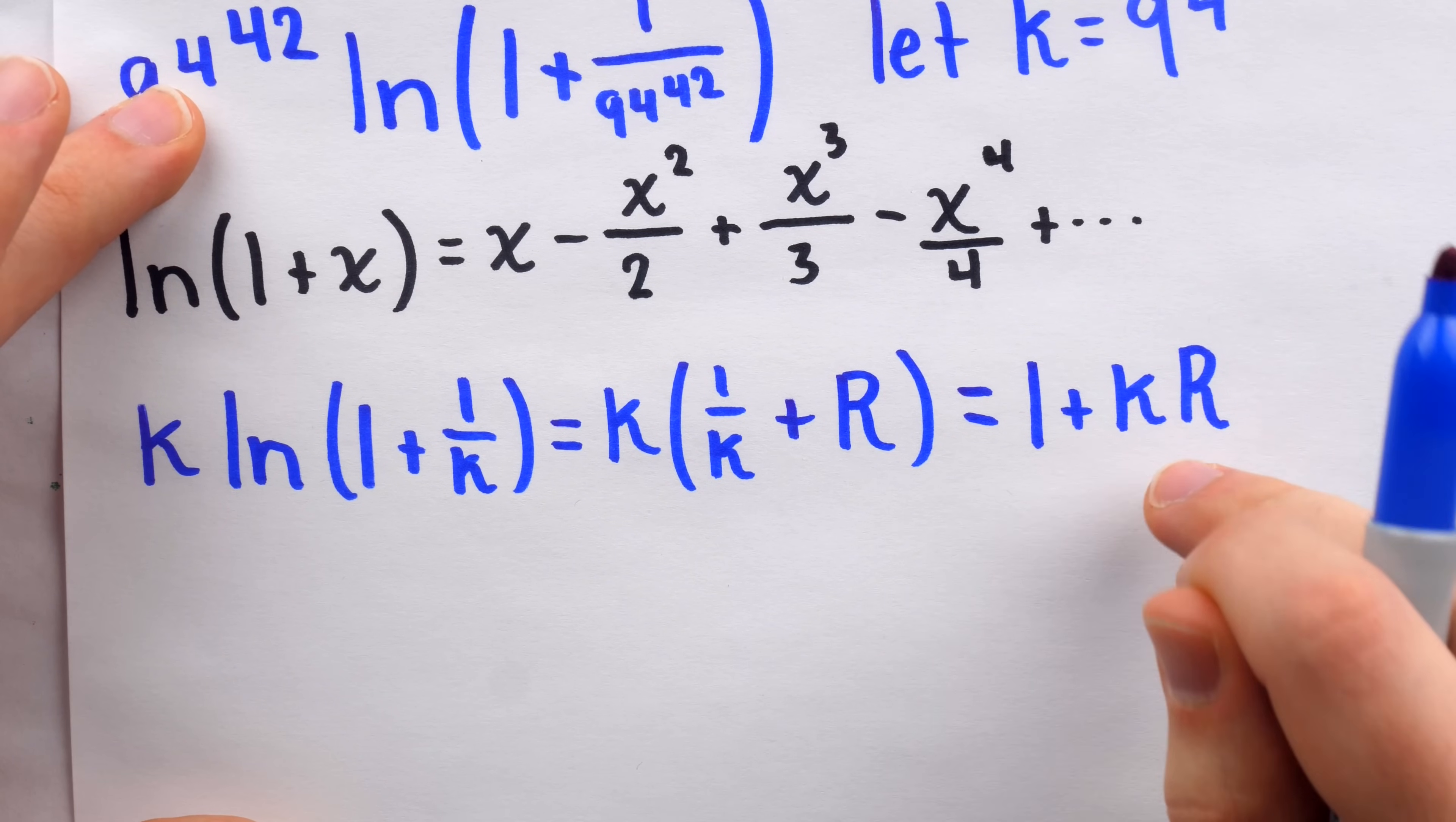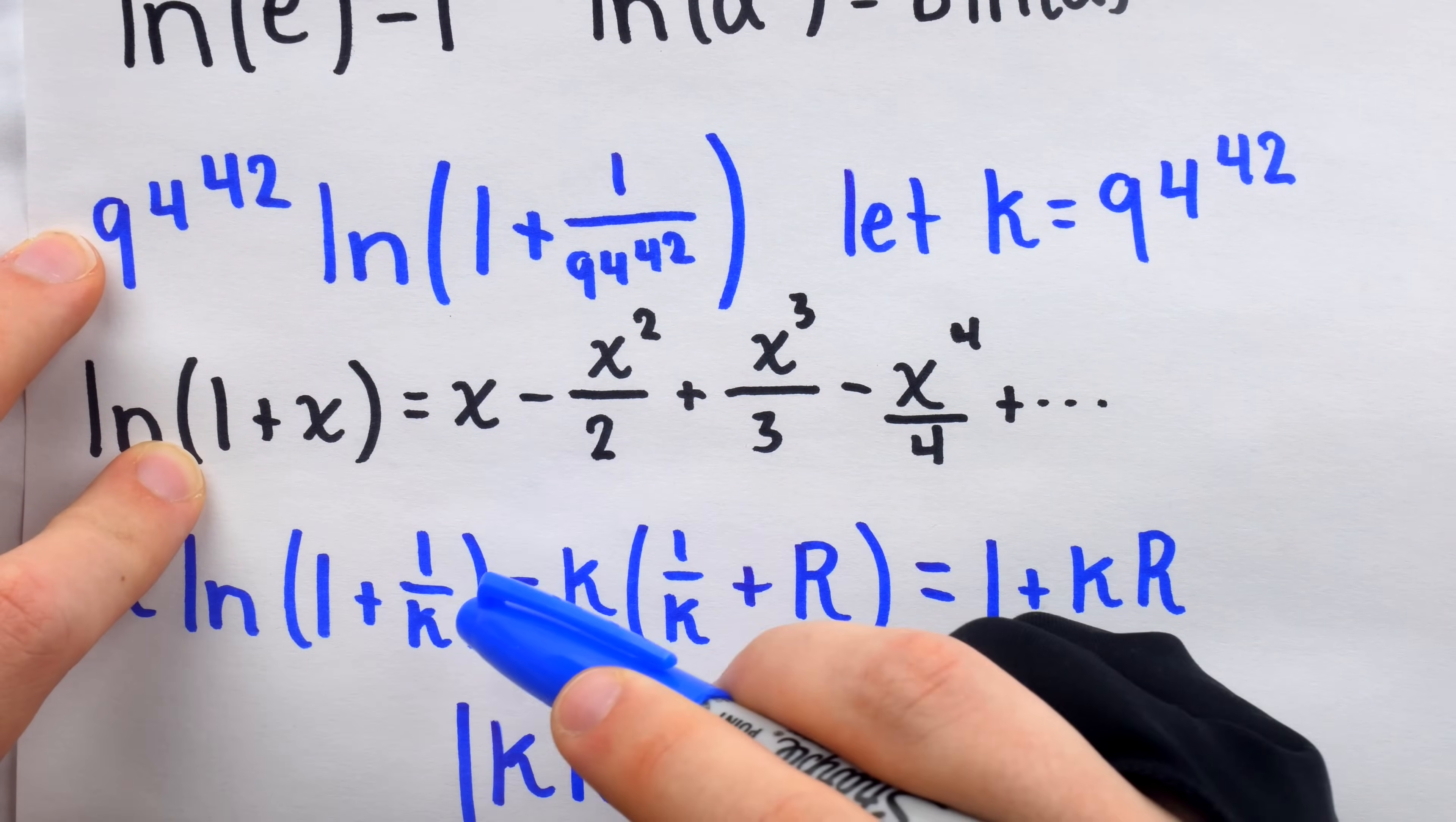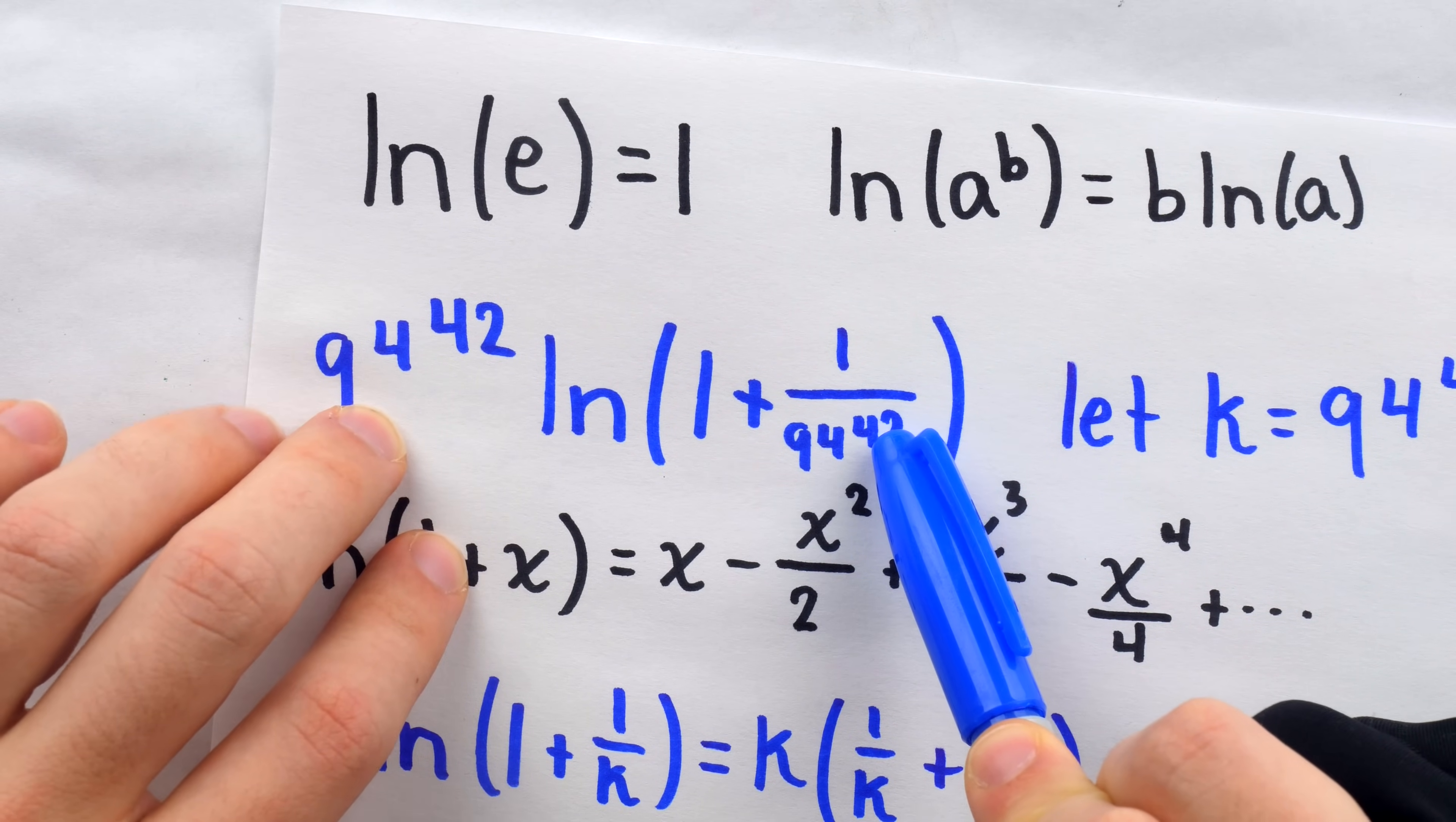The first term that we excluded is x squared over 2. And, per the theorem, we're disregarding the negative here. This means that Kr, which is measuring how far off 1 we are, Kr's magnitude, which is equal to k times the magnitude of r, because k is positive, this number must be less than or equal to k times x squared over 2. In our case, remember, x is 1 over k. So this would be, then, k times 1 over k squared over 2, or 1 over 2k squared. This, of course, is equal to 1 over 2k, since a factor of k would cancel out.